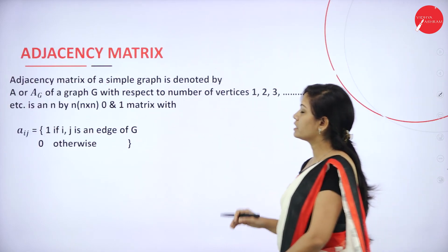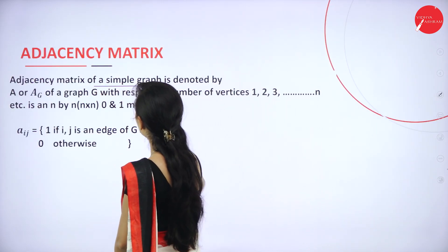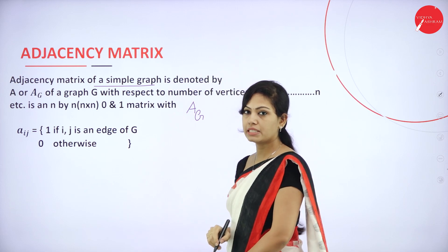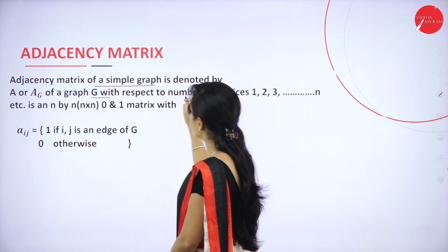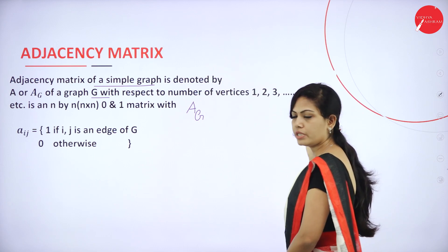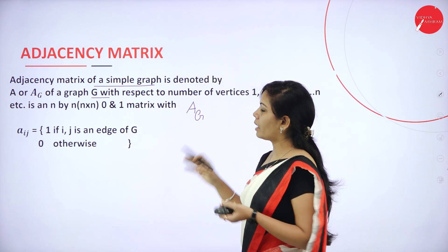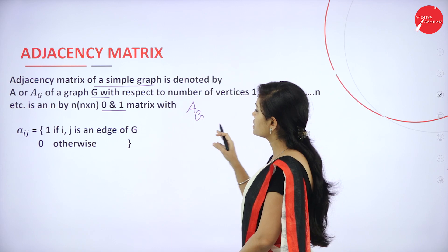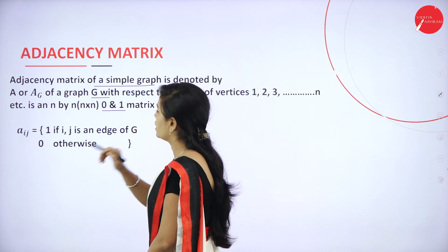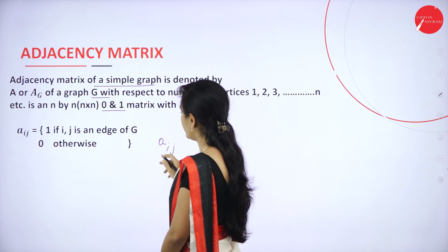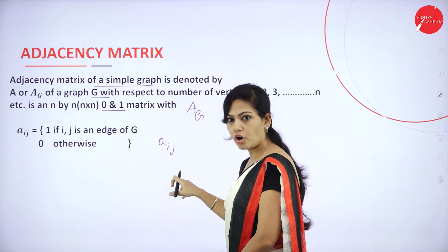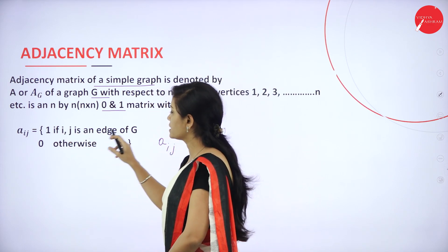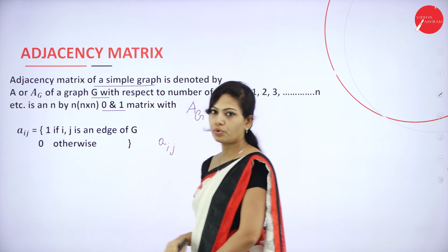Next we have the adjacency matrix. The adjacency matrix of a simple graph is denoted by A or A(G). The adjacency matrix of a graph G with n vertices is represented using 0 and 1. A[i,j] represents the adjacency of row i and column j — where i stands for row and j stands for column. It is 1 if (i,j) is an edge of G, otherwise it is 0.